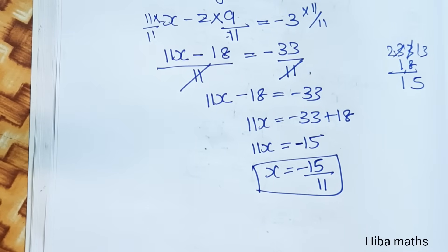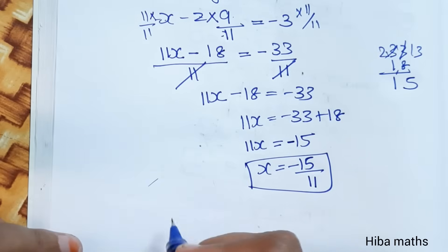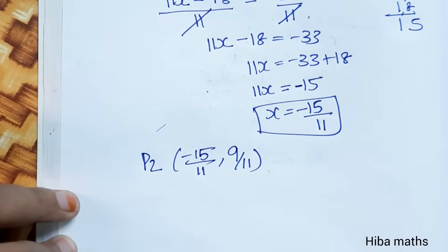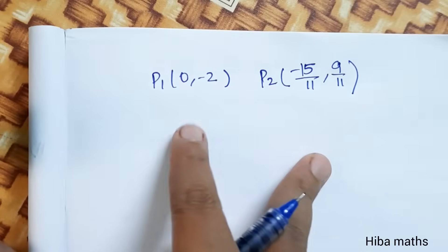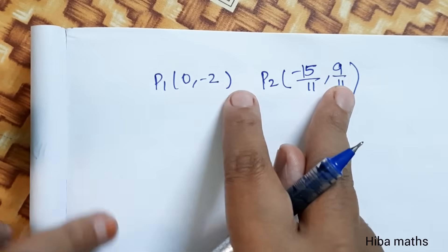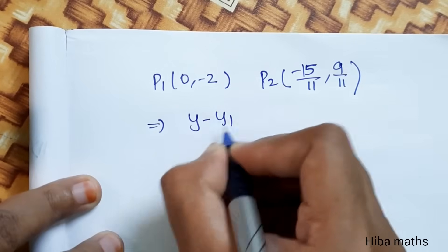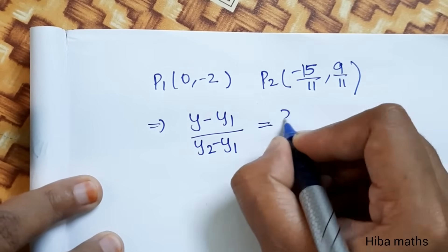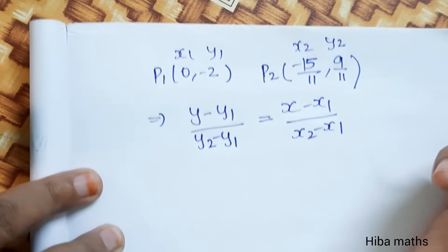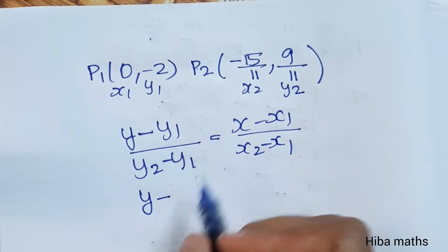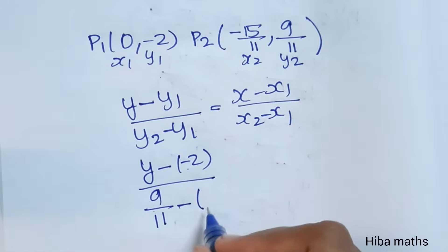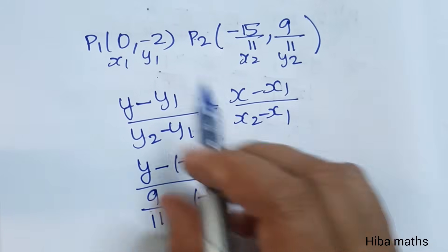Now use the two-point formula. P1 = (0, -2) and P2 = (-15/11, 9/11). So x1 = 0, y1 = -2, x2 = -15/11, y2 = 9/11. The formula is: (y - y1) / (y2 - y1) = (x - x1) / (x2 - x1). Substituting: (y - (-2)) / (9/11 - (-2)) = (x - 0) / (-15/11 - 0).